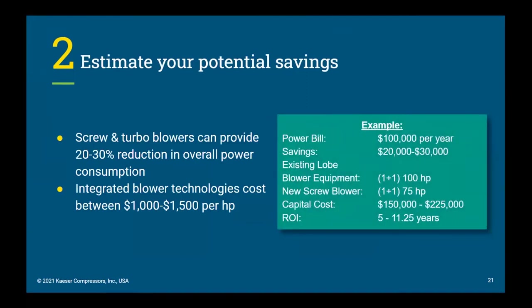Step two is to estimate your potential savings. Screw and turbo blowers can reduce annual power consumption by 20% to 30% depending on the process. Knowing that new integrated technologies cost between $1,000 and $1,500 per horsepower, we can ballpark the return on investment for this upgrade. If your annual power bill is around $100,000 a year, chances are you stand to save between $20,000 and $30,000 a year. Assuming the existing equipment on site is 100 horsepower, you'll likely need 75 horsepower screw blowers, giving an overall capital cost of between $150,000 and $225,000 — equating to a return on investment of between 5 and 11 years.